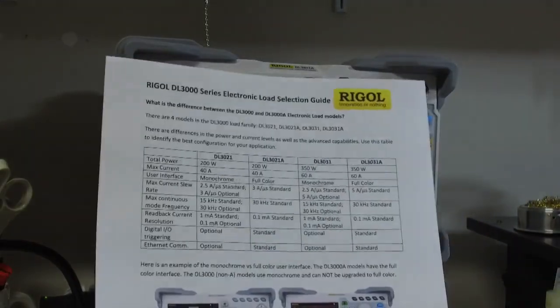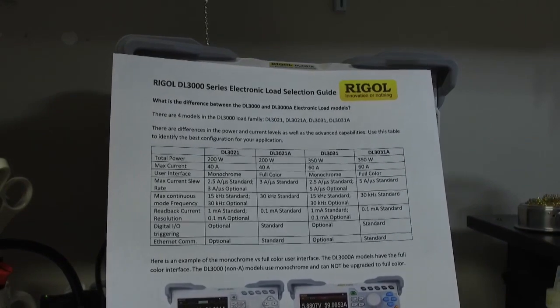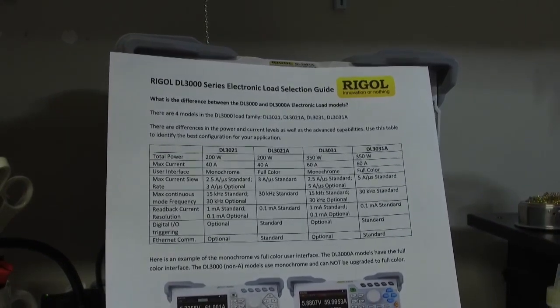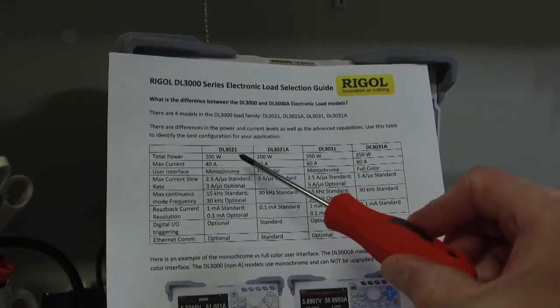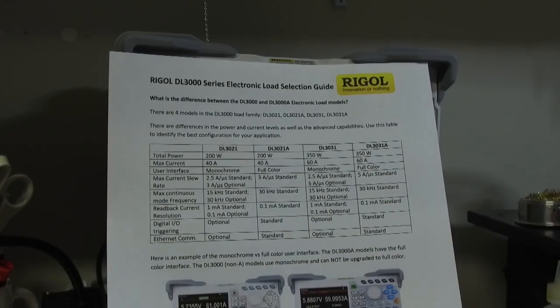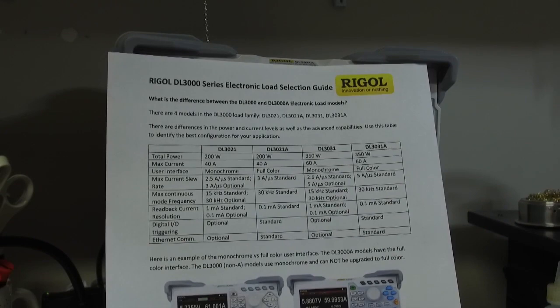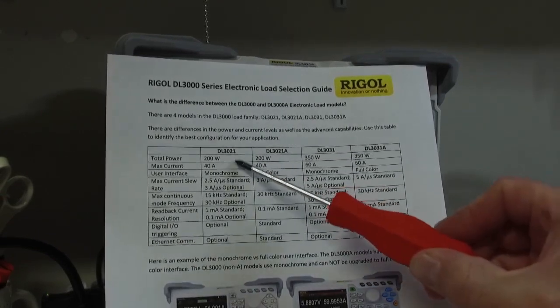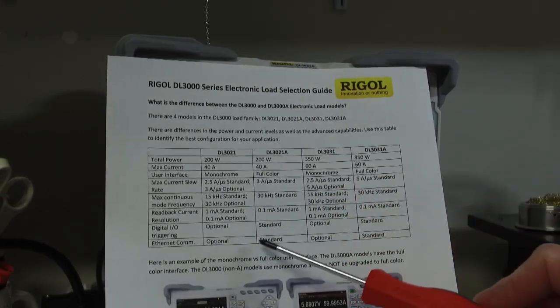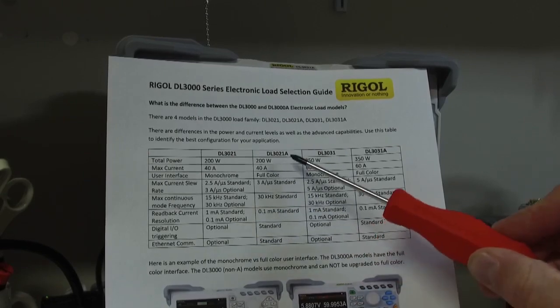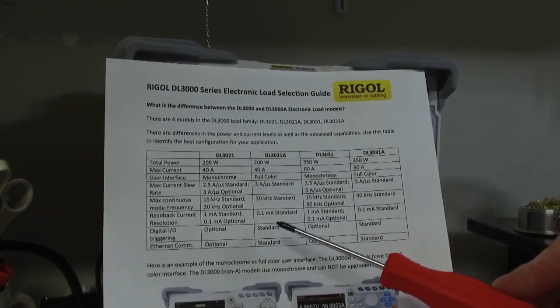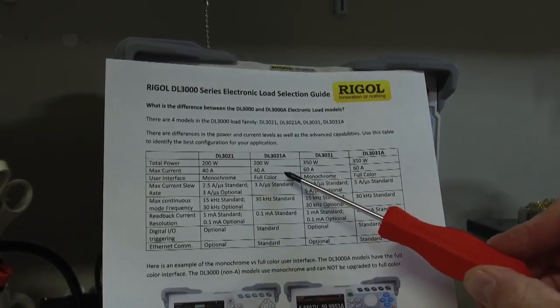Rigol has four loads in their current lineup: the DL3021, 3021A, 3031, and 3031A. The 21 series parts are very similar. The A version has a little bit higher performance and the full color screen.